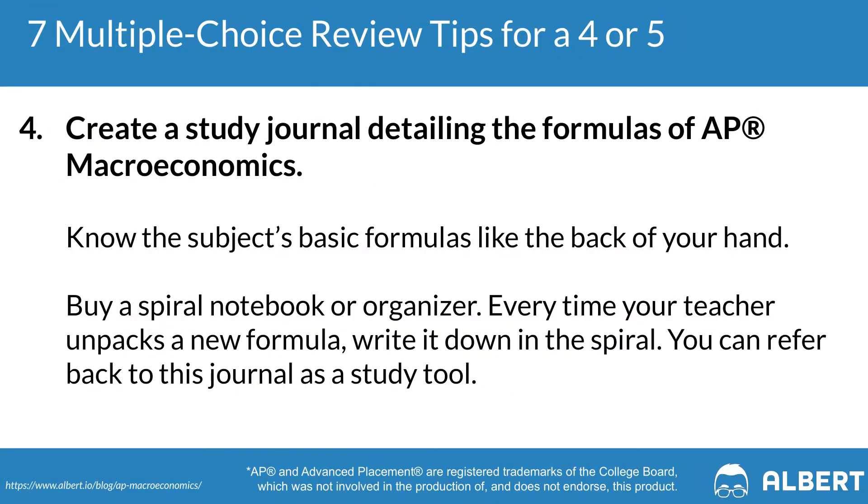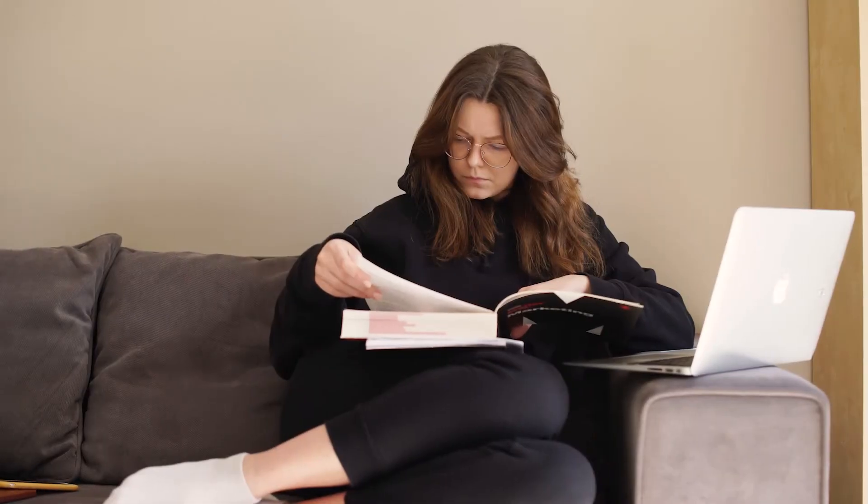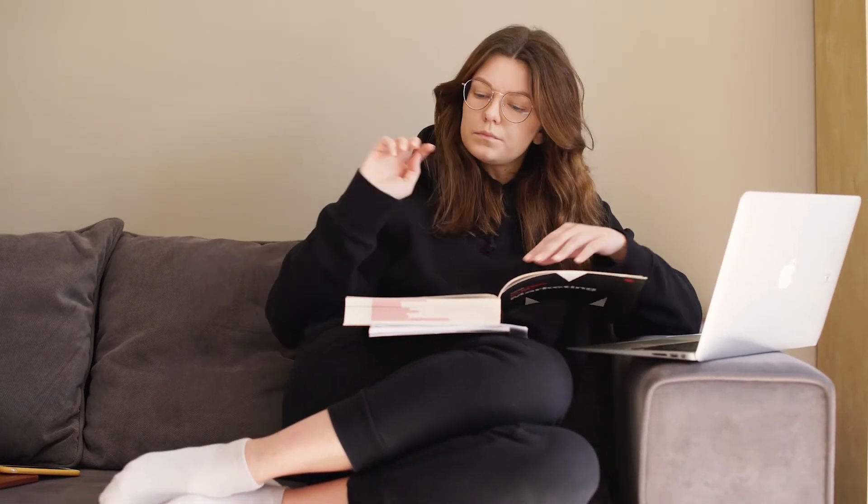Our fourth tip is to create a study journal of the important AP macroeconomics formulas. Knowing all the basic formulas can make a big difference in saving you time on test day. Get a spiral notebook, label it AP macroeconomics formulas, and over the course of the school year, as your instructor teaches a new formula and its applications, write it all down. Whether it's a basic GDP formula or a more complex banking formula, make sure it's in your study sheet. Having this journal will be incredibly helpful in refreshing your memory and cutting down on review time as you prepare for the exam.